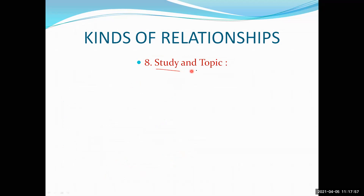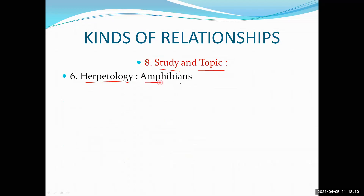In the next slide we will continue discussing studies and topics. The next term is herpetology — herpetology is the study of amphibians. Amphibians are animals that can live in water as well as on land. Then pathology — pathology is the study of diseases. Different diseases are studied in pathology.